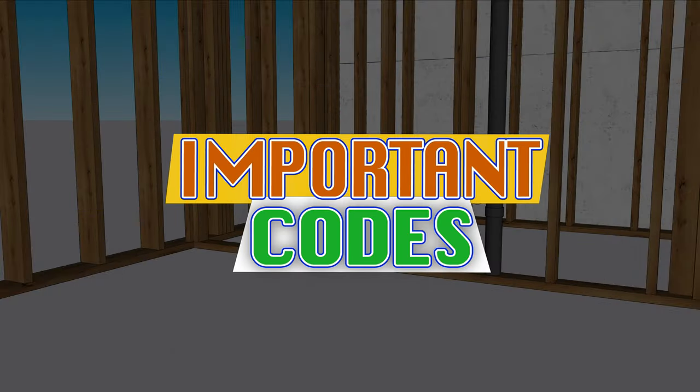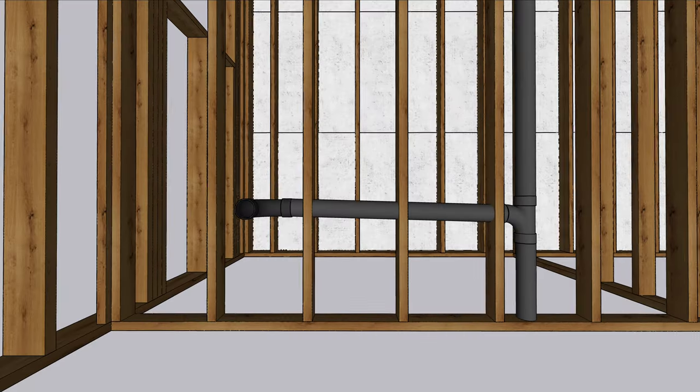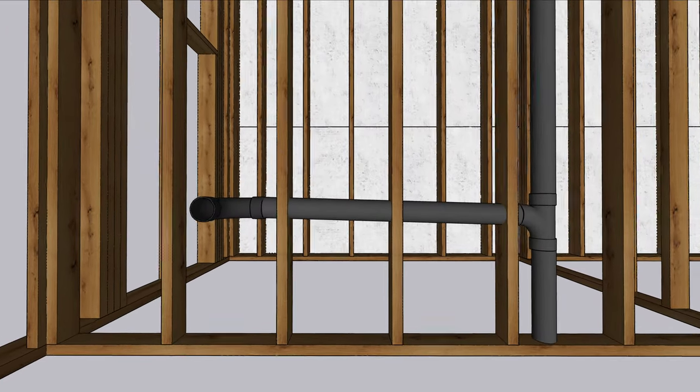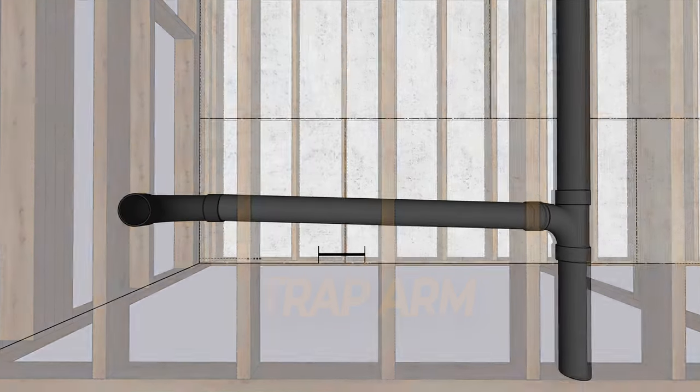Now let's talk about a few common codes you should take into consideration. The pipe we ran inside the wall studs is called a trap arm.